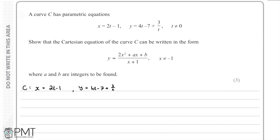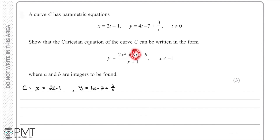In this question, a curve C has parametric equations x = 2t - 1 and y = 4t - 7 + 3/t, where t ≠ 0. We're asked to show that the Cartesian equation of curve C can be written in the form y = (2x² + ax + b) / (x + 1), where a and b are integers. We need to get these two equations into that form and find the values of a and b.